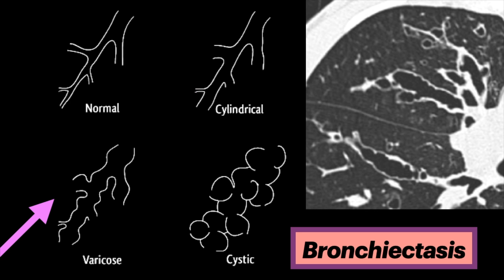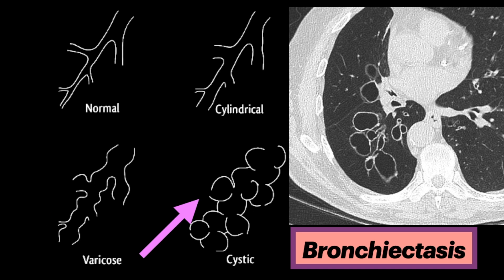The next type is varicose bronchiectasis. It's relatively uncommon, occurring up to 10% of the time. There is a beaded appearance where dilated bronchi have interspersed sites of relative narrowing. The most severe form is cystic bronchiectasis, where there are cyst-like bronchi extending to the pleural surface, and air-fluid levels may commonly be present.